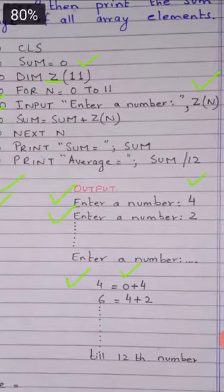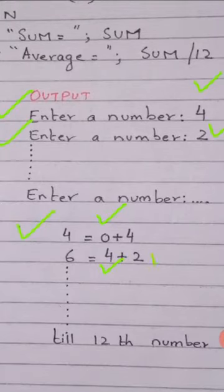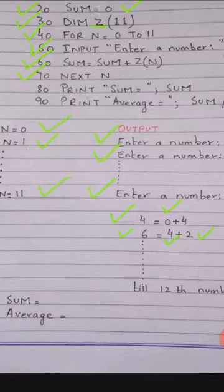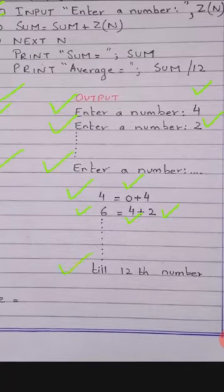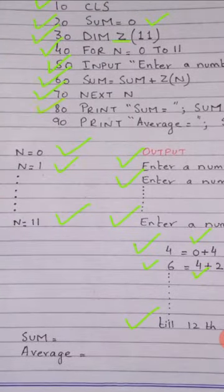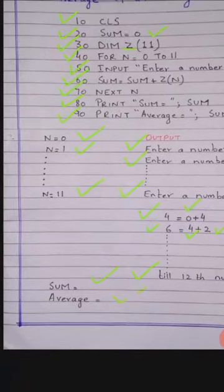جب n کی value 1 ہو جائے گی تو آپ اگلا number enter کریں گے، مثلاً 2۔ اب sum کی calculation یہ ہوگی کہ پہلے sum کی value تھی 4، اس میں next number 2 add ہوگا تو 4 plus 2 equal to 6۔ اس طریقے سے loop مسلسل چلتا رہے گا جب تک n کی value 11 نہ ہو جائے۔ آخری یعنی 12ویں number کو add کرنے کے بعد line number 80 پر control transfer ہوگا اور sum screen پر print ہوگا۔ پھر line number 90 پر average calculate ہو کر screen پر display ہو جائے گا۔ اس طریقے سے اس program کی execution ہوگی اور screen پر sum اور average display ہوگا۔